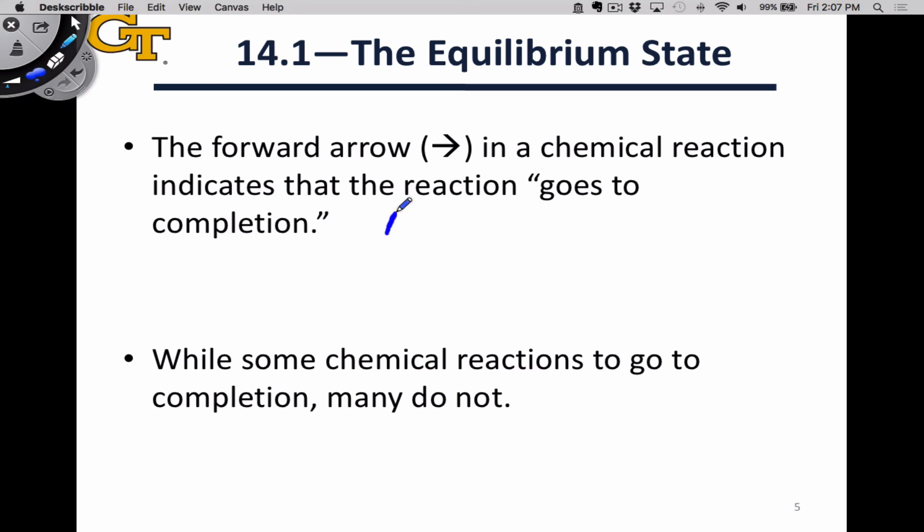Essentially all of the chemical reactions we've looked at so far go to completion. By completion, we mean that all of the reactants are converted to products at the end of the reaction. When things stop happening in the reaction, we can be assured that all of the reactants have been converted to products as long as they're present in the right stoichiometric ratio.